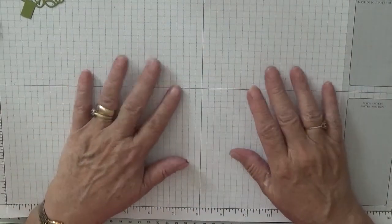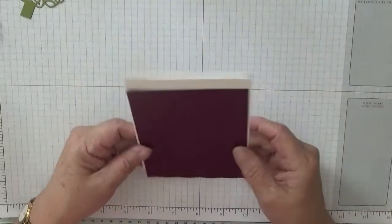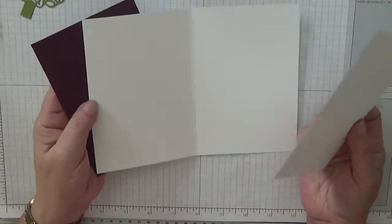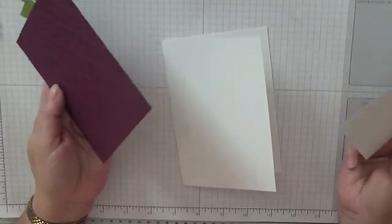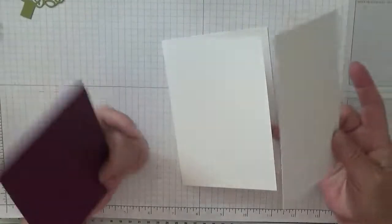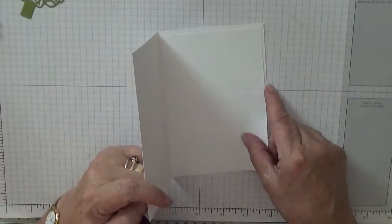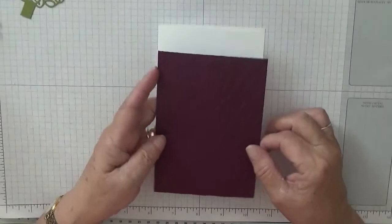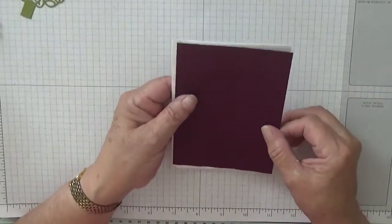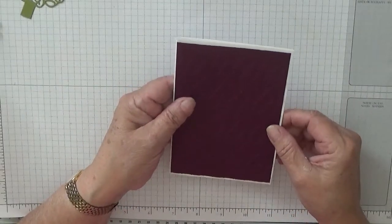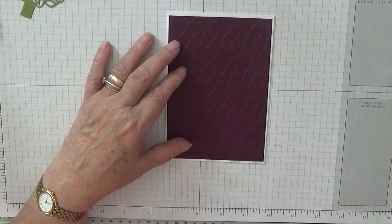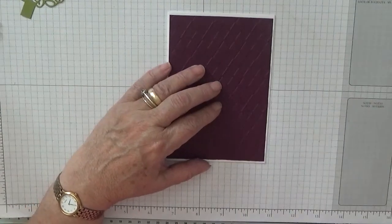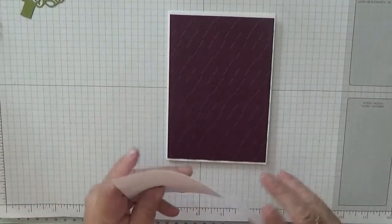Right, you need a card base of eight and a quarter by five and seven-eighths scored at four and one-eighth and folded in half. A piece of white cardstock at five and five-eighths by three and seven-eighths to go on the inside. I am using Blackberry Bliss, and this mesh is five and five-eighths by three and seven-eighths to go on the outside. I need a piece of white bit.